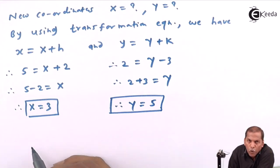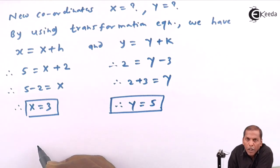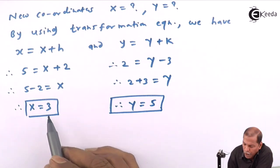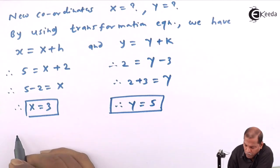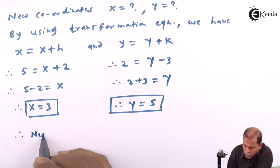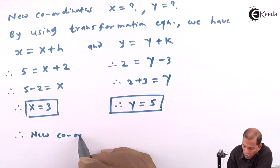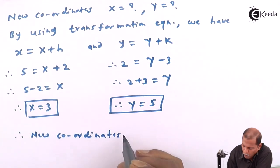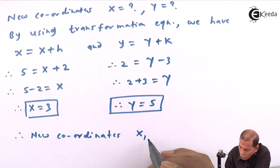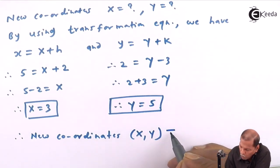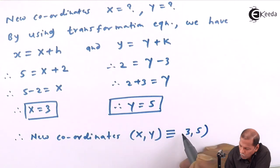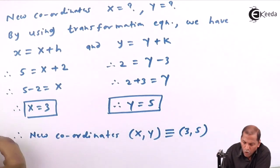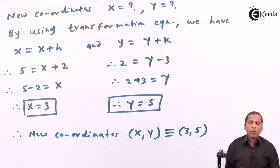Therefore the new coordinates, capital X comma capital Y, are equal to (3, 5). This is the required solution for the given problem. Thank you.